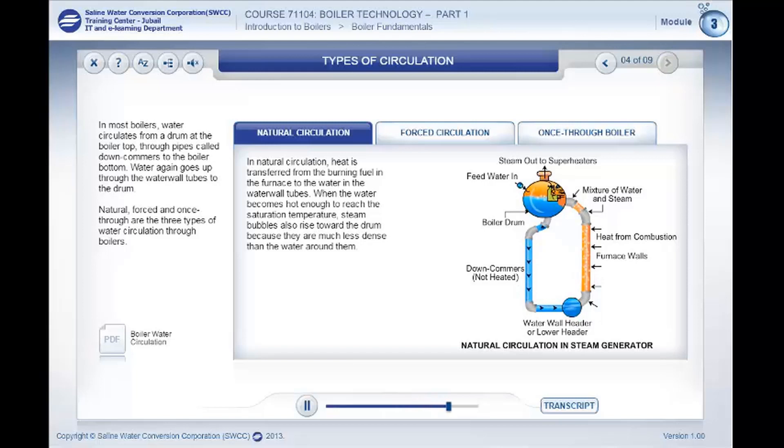Natural, forced, and once through are the three types of water circulation through boilers.